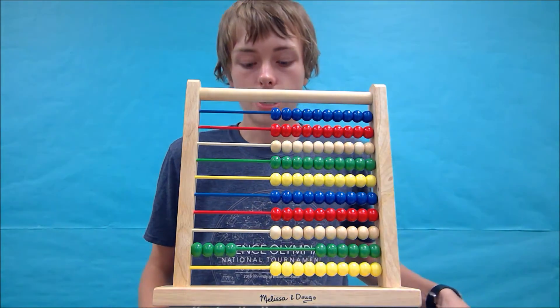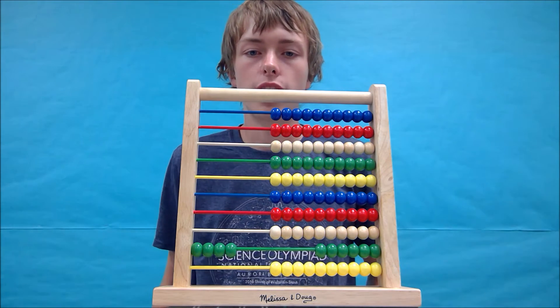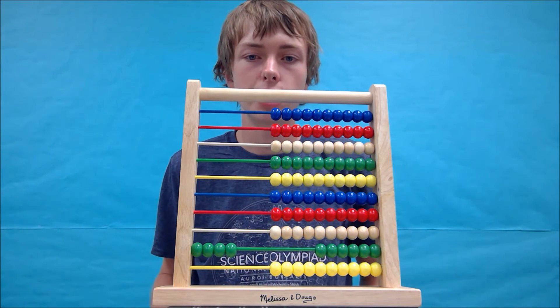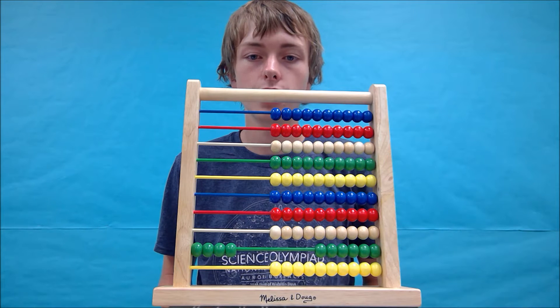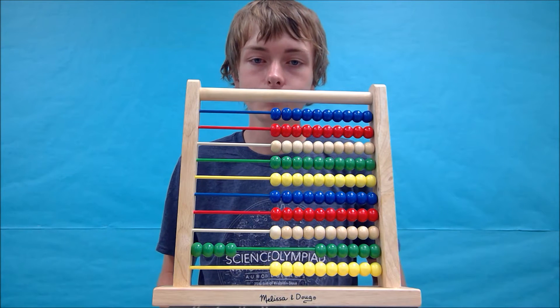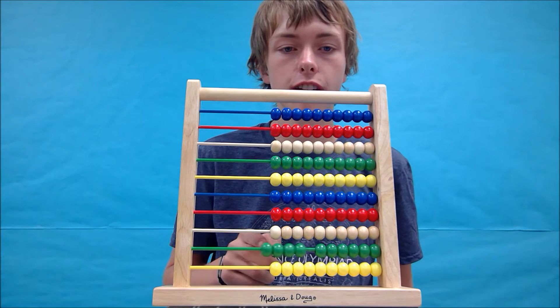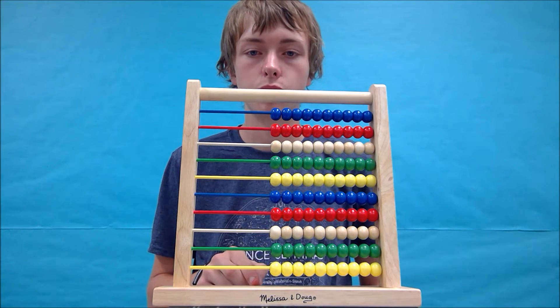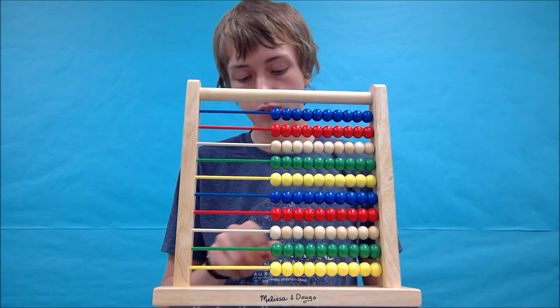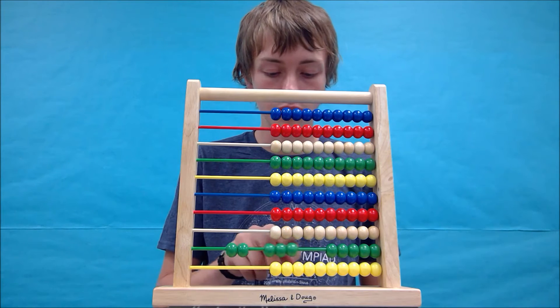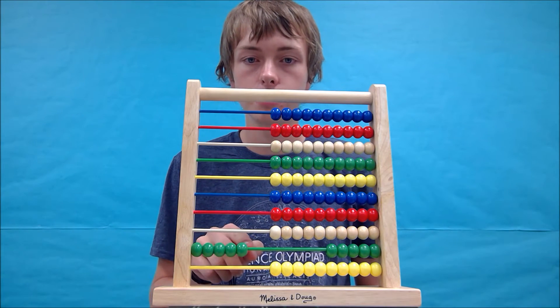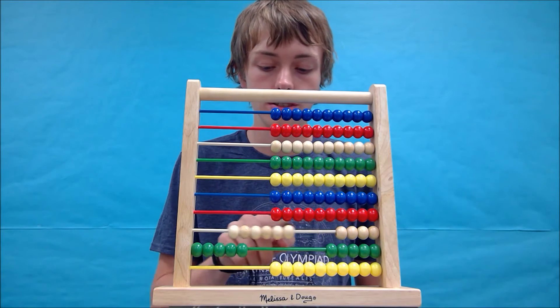Now we're going to try a little harder one. We're going to try 650 minus 45 minus 28 minus 39. And so let's start by clearing our abacus and forming the first number, which is 650. 0 in the 1s, 5 in the 10s, and 6 in the 100s.